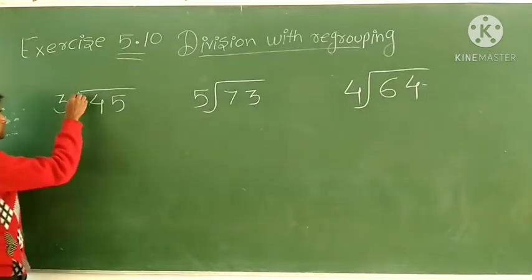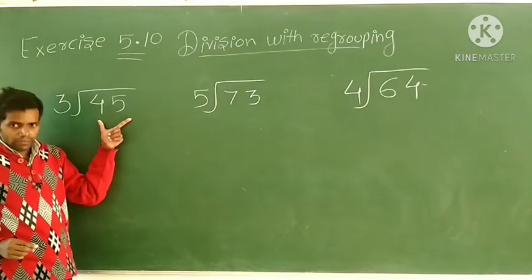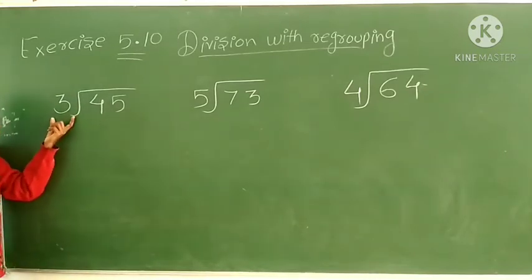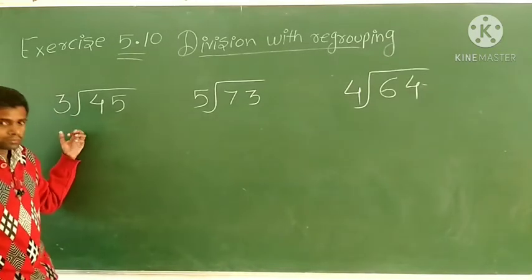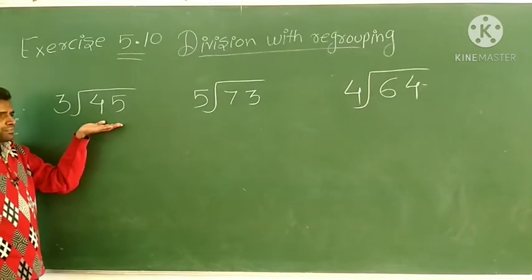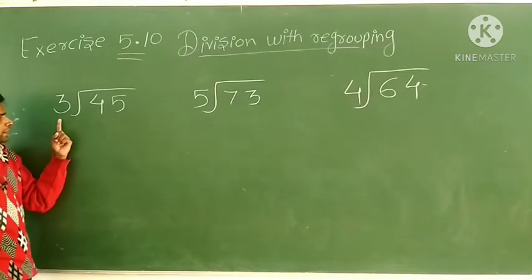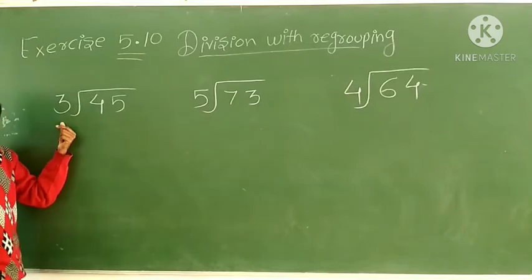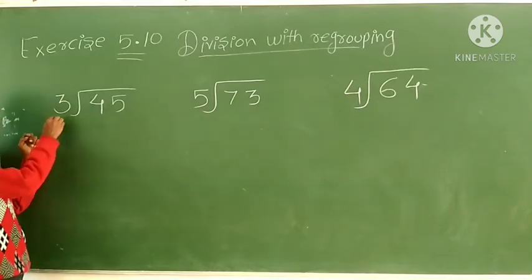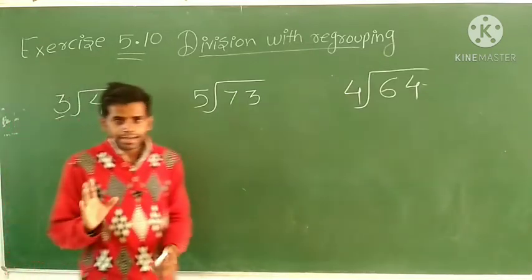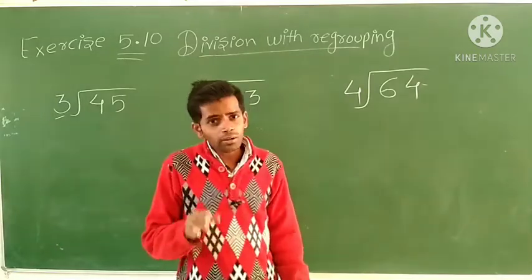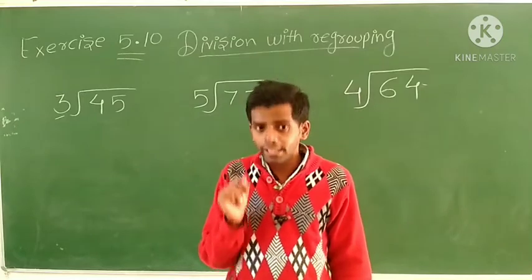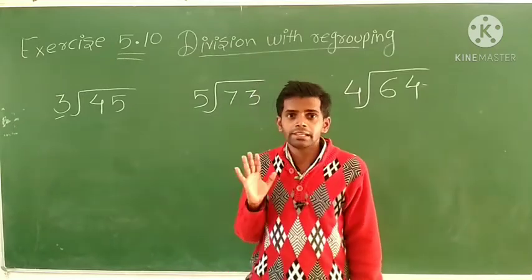In this question, 45 is our dividend and 3 is the divisor. That means we have to divide 45 by 3. Here, 3 is a single-digit number, so we will solve this question step by step, taking single digits one at a time.